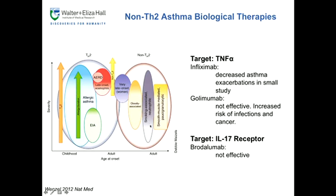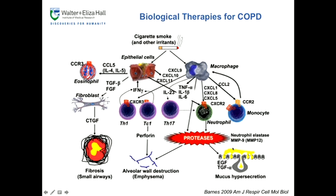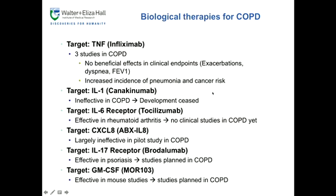For non-TH2 asthma, lots of work has been done but pretty much none of the therapies work. TNF-alpha was tried, and others, but none have worked so far. For COPD the story is basically the same — there are highly intricate signaling cascades, lots of things have been tried, and nothing works.